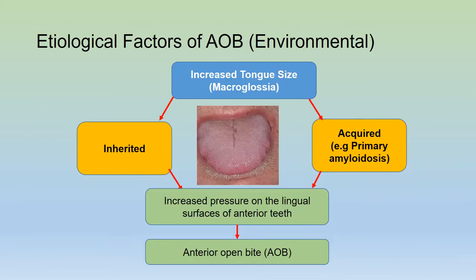An increased tongue size, also known as macroglossia, can also give rise to an open bite condition. Macroglossia can either be inherited or acquired secondary to diseases such as primary amyloidosis. An increased tongue size causes increased pressure on the lingual surfaces of the anterior teeth, leading to an anterior open bite.